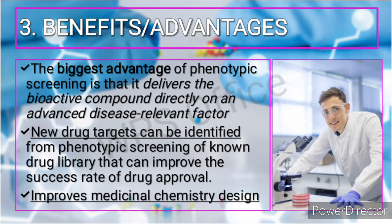Promising examples include antimicrobial assays, cell proliferation, platelet aggregation, and insulin release from pancreatic beta cells. A key advantage of phenotypic screening over target-based screens is the ability to capture biological complexity that cannot be represented in reductionist, target-based approaches. New drug targets can be identified from phenotypic screening of non-drug libraries, improving the drug approval success rate. Notably, 37% of the first-in-class drugs approved by the FDA between 1999 and 2008 were discovered by phenotypic screening. It also improves medicinal chemistry design by enabling the discovery of toxicity mechanisms and reducing the risk of unexpected failures.